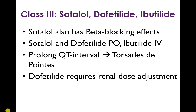The other class 3 antiarrhythmics to know are sotalol, dofetilide, and ibutilide. Sotalol, as indicated by the '-ol' at the end of the name, also has beta-blocking effects. Sotalol and dofetilide are oral (PO) medications, whereas ibutilide is an IV medication. All three of these drugs can prolong the QT interval and can cause torsades de pointes. Dofetilide, importantly, requires renal dose adjustment.